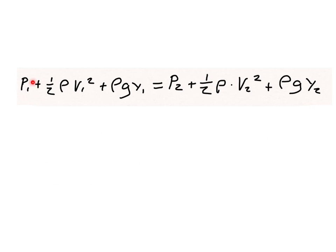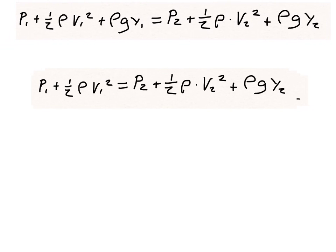The Bernoulli equation states: pressure at point 1 plus one-half of the density times velocity squared plus density times gravity times y1 equals the pressure at point 2 plus one-half of the density times velocity 2 squared plus the potential energy term. We can quickly simplify because y1 equals 0, so that whole term drops out.